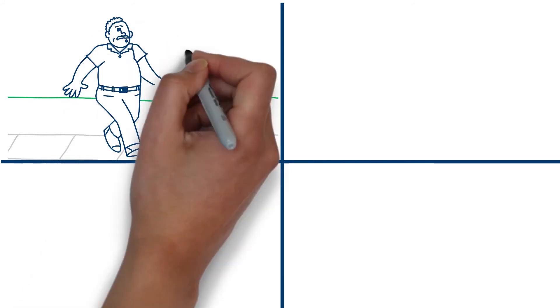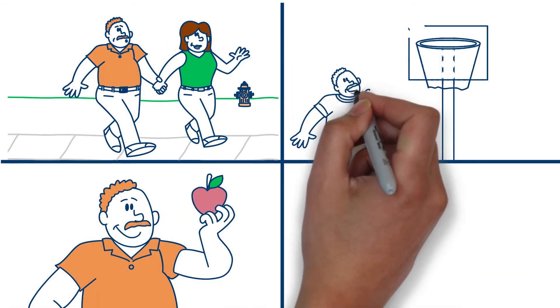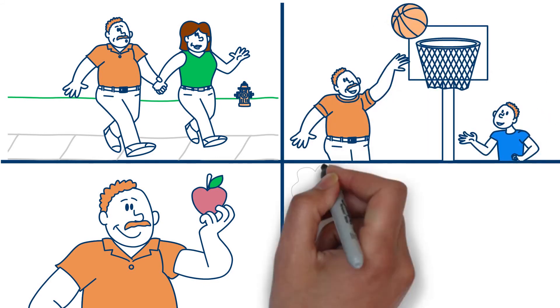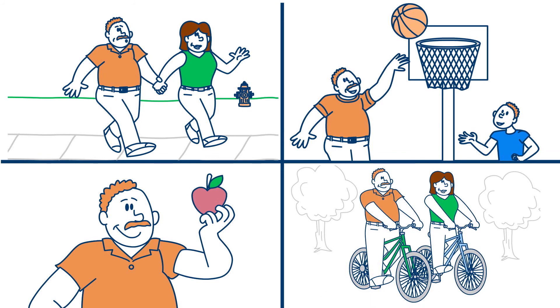Now is the time to be proactive. Lifestyle changes and medications can decrease the risk of health complications. Exercise, a healthy diet, and weight control are natural treatments for hypertension. But your doctor may also recommend medication to lower your blood pressure.